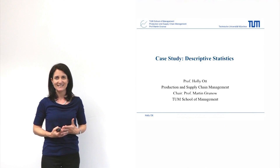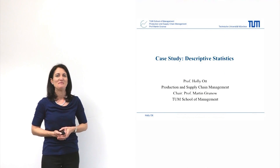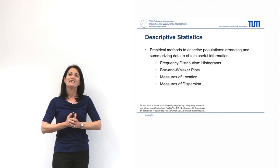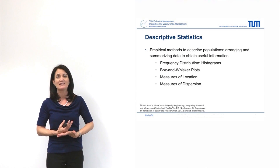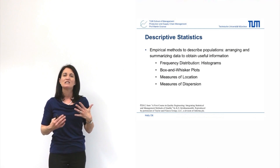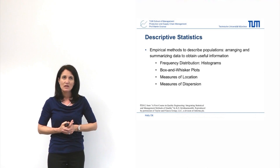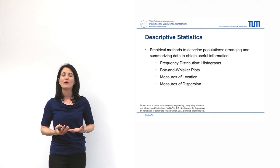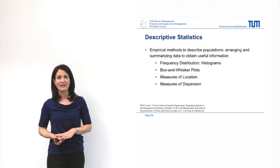We're going to do a short case study on descriptive statistics today, just as a recap from what we just heard. Descriptive statistics means using empirical methods to describe populations. We're going to be arranging data, displaying data. We talked about histograms, box and whisker plots, and calculating parameters like the mean, the standard deviation, the variance, and the range.